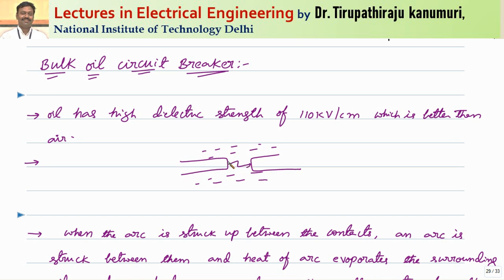The hydrogen gas will occupy a volume of nearly 1000 times that of the oil that is decomposed — if one ml is decomposed it becomes 1000 times in volume. That gas forms a bubble around the arc and the contacts. Because hydrogen gas is a very good conductor of heat, it provides a cooling effect on the arc, whereby recombination of charges happens and the dielectric strength of the medium is increased.